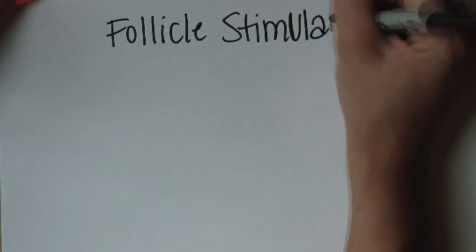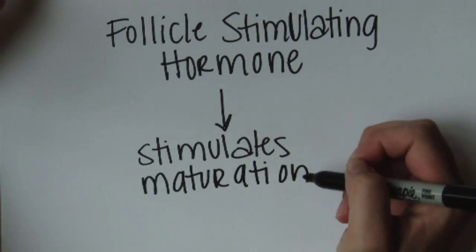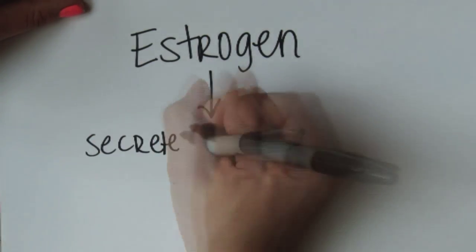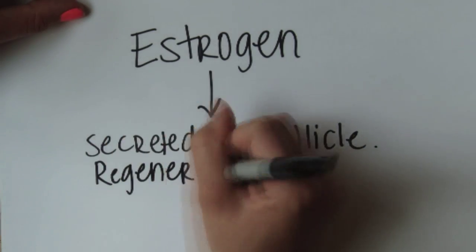Let's recap. Follicle-stimulating hormone will stimulate the development of the follicle. The follicle will secrete estrogen, which promotes the regeneration of the stratum functionalis.